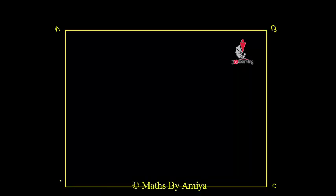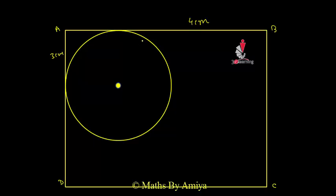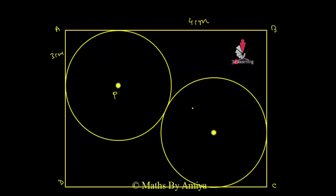We have a rectangle — name it A, B, C, D — with dimensions 4 cm and 3 cm. Now place a circle with center P, and another circle with center Q. To get the largest possible circles inside the rectangle, the circles should be tangential to each other — meaning they touch each other — and the sides of the rectangle should also be tangent to the circles.